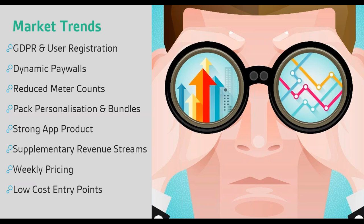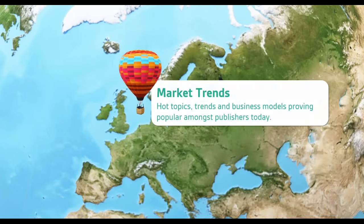Another trend is showing weekly pricing rather than just a low start price. Showing a price point of one pound a week is psychologically better than presenting 52 pounds a year to people. It's a challenge for some of the more print-focused platforms to be able to present that on the front end, but the psychological benefit is significant.